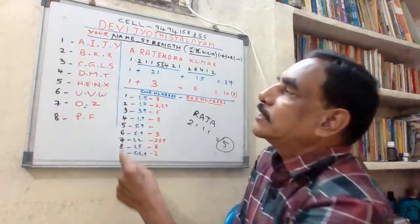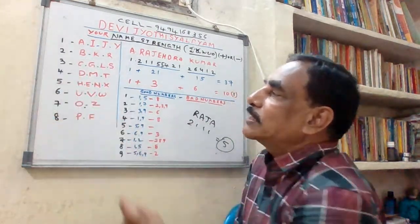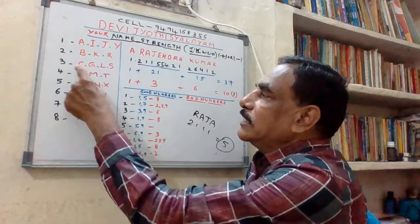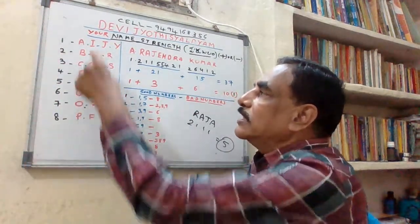Number 2 represents B, K, R. Number 3 represents C, G, L, S. Like that, these numbers are representing these letters.